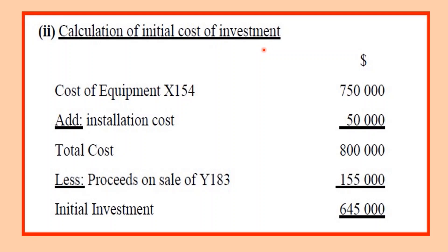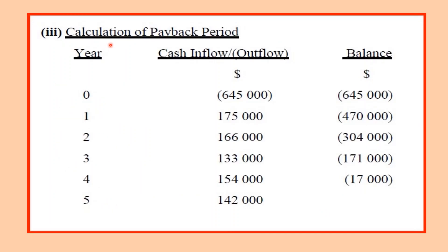For the initial investment, the cost of Equipment X-154 — the new equipment — is $750,000, with an installation cost of $50,000, giving a total cost of $800,000. When you sell the old Equipment Y-183, you receive $155,000, which is knocked off against the cost. This gives us an initial investment of $645,000.